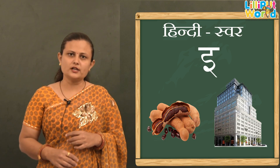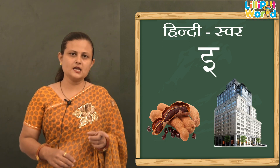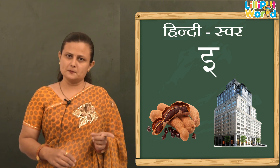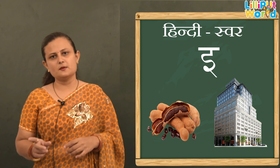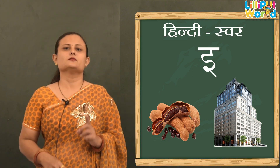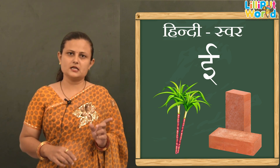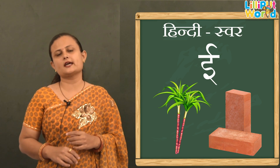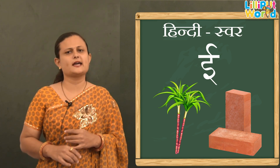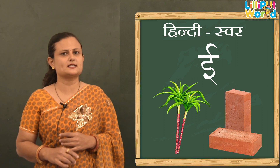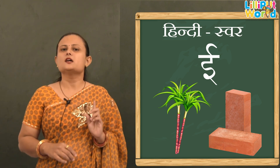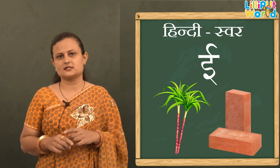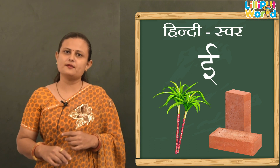Now छोटी इ — E se Imli. Imli ka taste kaisa hota hai bachon? Khatta-khatta! E se Imarat — Imarat means building. Now बड़ी ई — Ee se Ikhk, Ikhk means sugarcane. Sugarcane ko Hindi mein ganna bhi bolte hain, aur I think aapko ganne ka juice bahut pasand hoga. Badi Ee se Eet — Eet means bricks, jo ghar banane mein kaami aati hai.